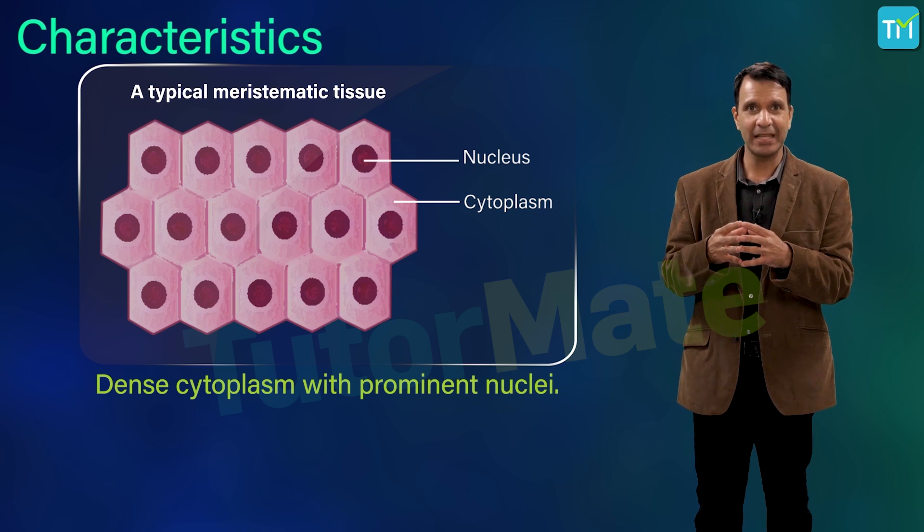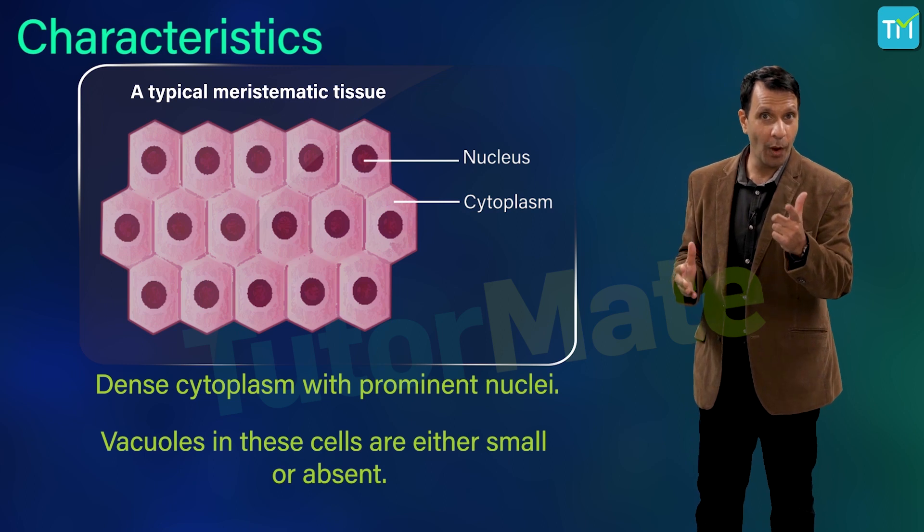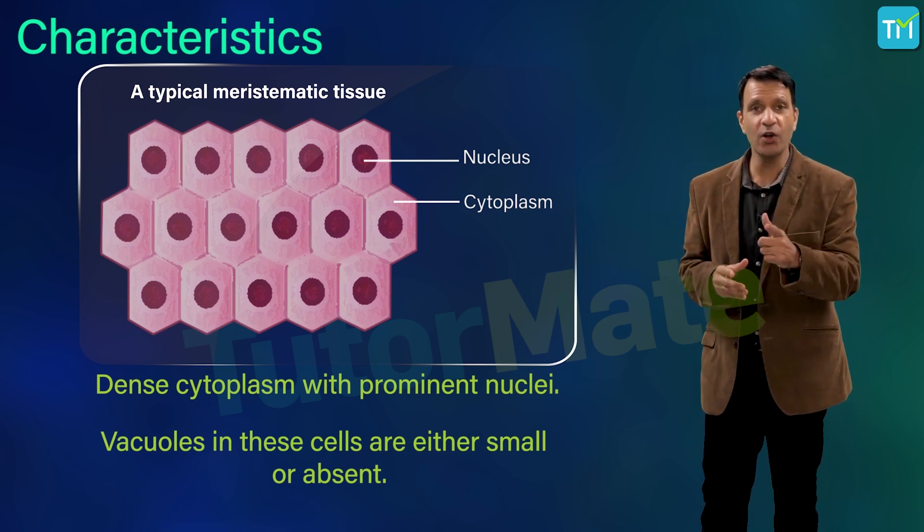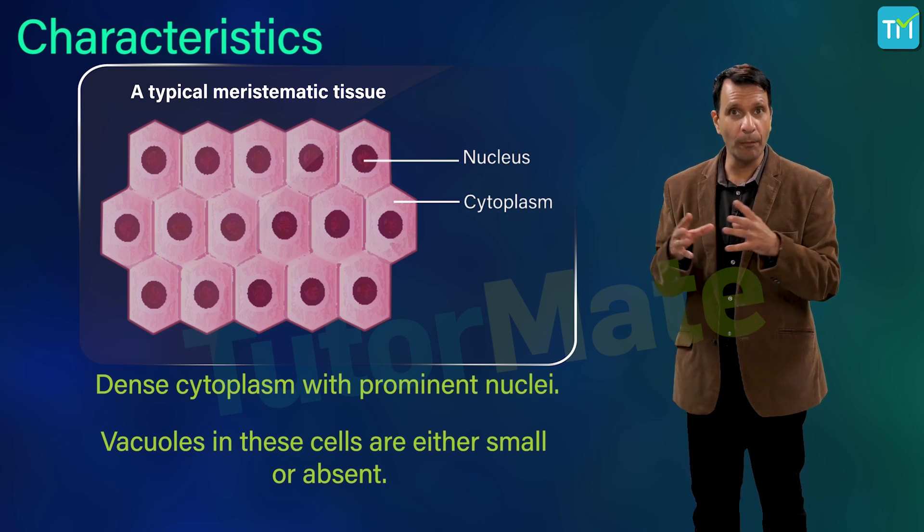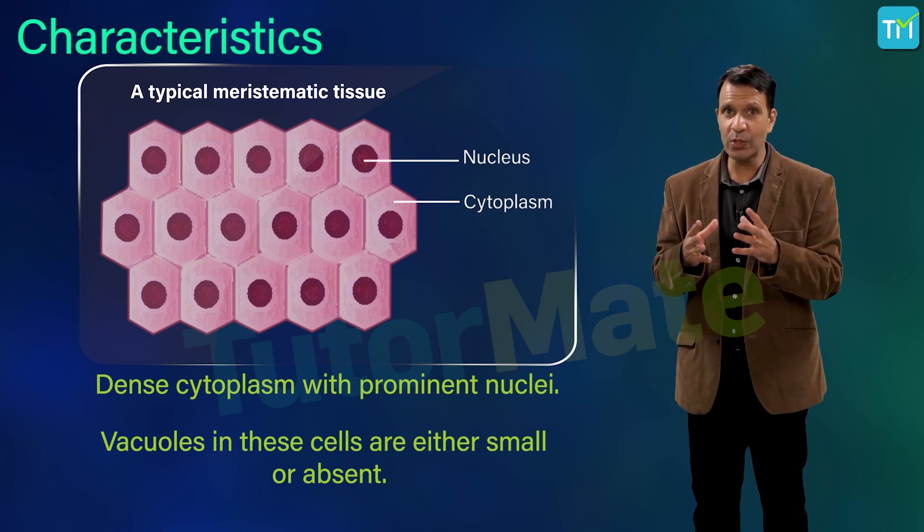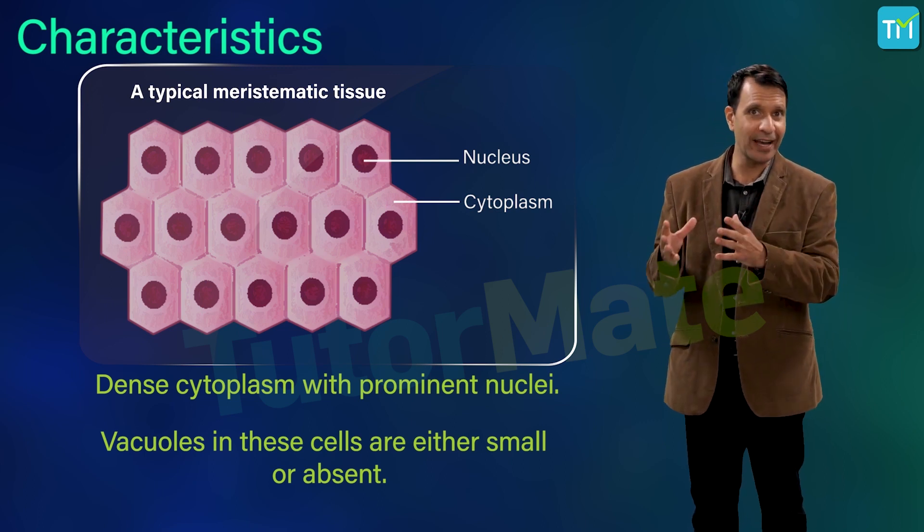Vacuoles in these cells are either small or absent. Do you know why? Because meristematic cells have an ability to divide and form new cells. Vacuoles have a function of storing food and other nutrients that a cell might need to survive.